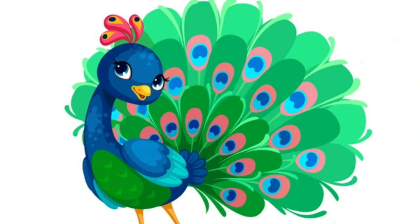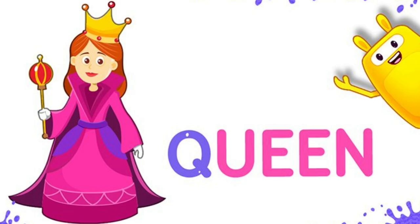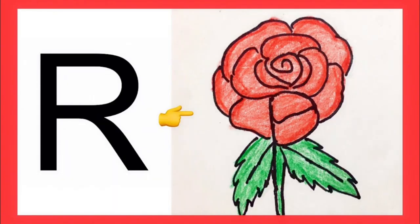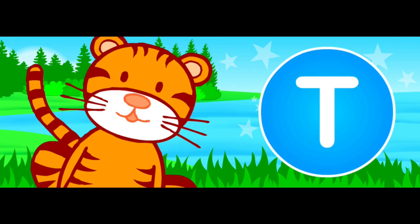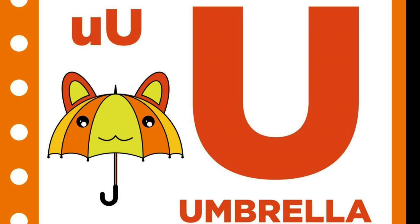Orange means Santra. P is for Peacock. Peacock means Mor. Q is for Queen. Queen means Rani. R is for Rose. Rose means Gulab. S is for Ship. Ship means Ship. T is for Tiger.